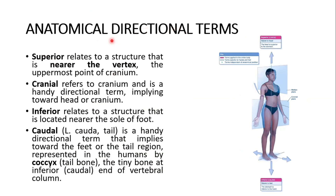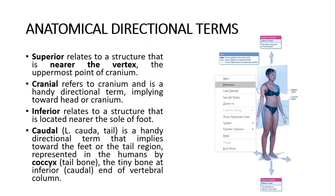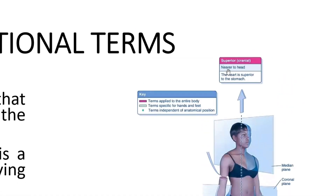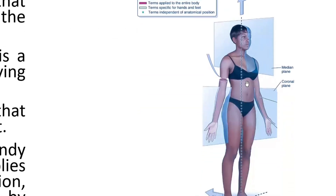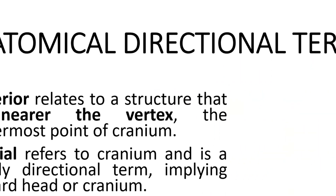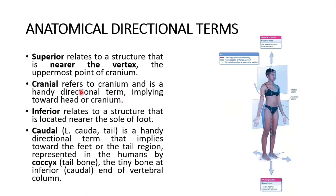The first directional term is superior — indicated by this arrow. It relates to a structure that is nearer to the vertex, the uppermost point of the cranium. This is the head end and this is the superior, also called cranial, meaning nearer to the head. For example, the head is superior to the stomach. Cranial refers to the cranium and is a handy directional term implying toward the head or cranium.